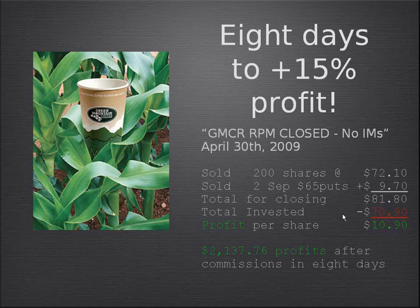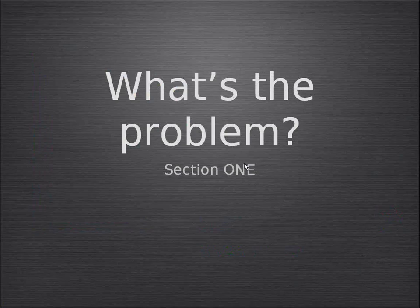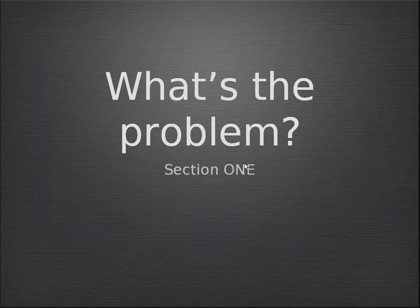Does Kurt see this type of return on every trade? No — this is what's possible. When we enter a married put position we have a limited risk — in this case about 8-9% of total investment, guaranteed to exit at $65. Even if the stock plummeted to $20, we could exercise the put and only risk $5.90 on the total position. Because we didn't sell a call, we had unlimited upside profit potential. The income methods will help adjust the position as we move forward.